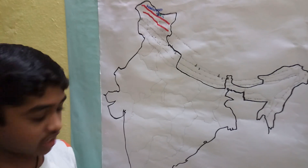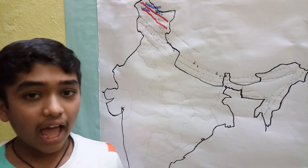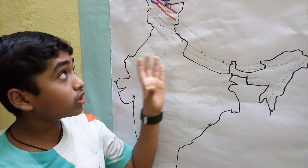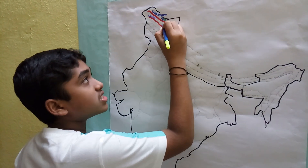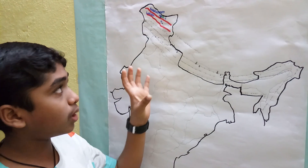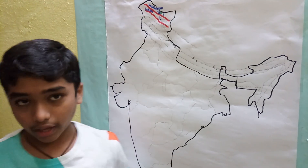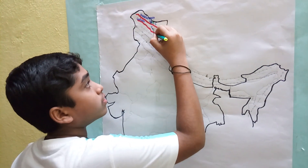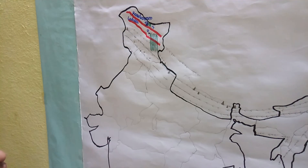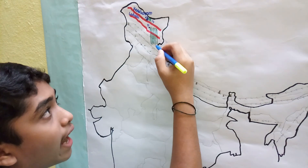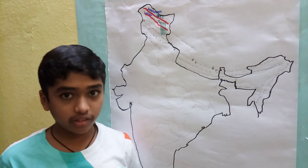The Ladakh range has the second coldest inhabited town — Dras — situated in the Kargil district of Jammu and Kashmir. We also find a cold desert in this range, from Leh in the north to Himachal Pradesh in the south. This is the only cold desert in India, situated in the Ladakh range.